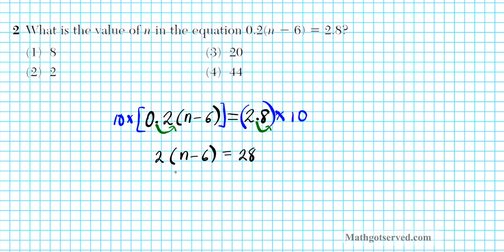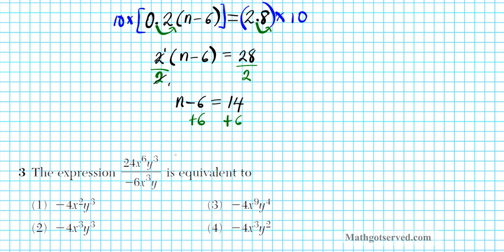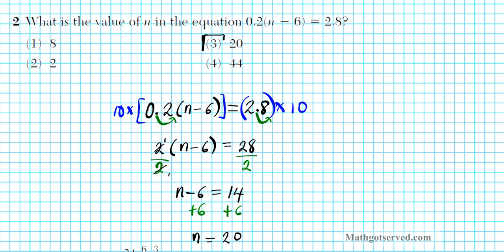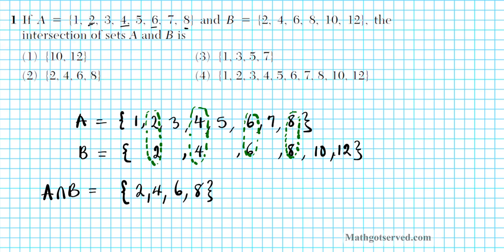Now there are two ways we can solve this equation. We can either distribute and solve or we can divide and solve. Let's divide and solve. Divide both sides by 2. This divides out, 2 divides into each other once. You have n minus 6 equals 14. To finish this problem off, you simply add 6 to both sides and that yields n equals 20. So our final answer is option number 3.